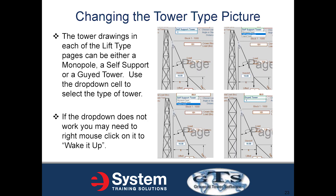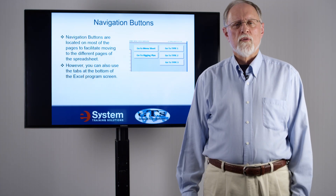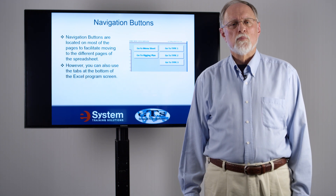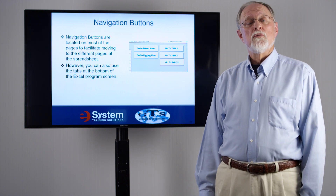The tower drawings in each of the lift type pages can be a monopole, a self-support, or a guyed tower. You use the drop-down cell to select the tower type. If the drop-down does not work, you may need to right-click on it to wake it up. Navigation buttons are located throughout the spreadsheet for ease of moving around, though you can also use the tabs at the bottom of the Excel program.